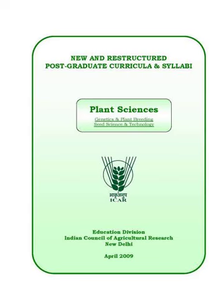Principles and methods of seed production of varieties and hybrids of cereals: wheat, paddy, sorghum, pearl millet, and maize. Pulses: chickpea, pigeon pea, green gram, black gram, soybean, and cowpea. Oil seeds: groundnut, brassica, sesame, sunflower, and castor. Fiber crops: cotton and jute. Vegetable crops: tomato, brinjal, okra, chili, cabbage, cauliflower, radish, knol-khol, turnip, carrot, and cucurbit crops.